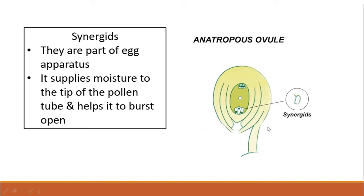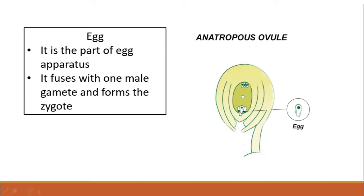The synergids are the two lateral cells of the egg apparatus. Their primary function is to attract the pollen tube and cause its bursting. Once the pollen tube comes in contact with the synergids, it absorbs moisture from them, causing the pollen tube to rupture and release its contents. The egg cell is the central cell of the egg apparatus; it fuses with one of the male gametes and eventually develops to form the zygote.